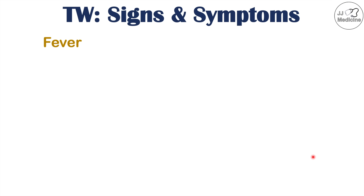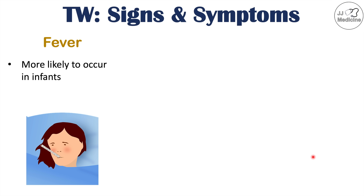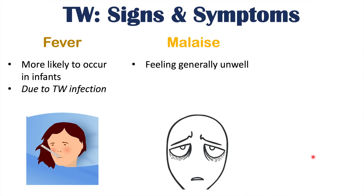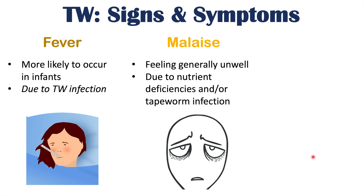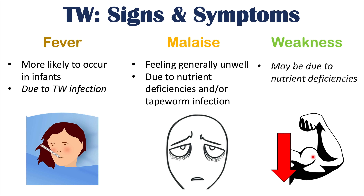Other signs and symptoms include fever, which is more likely to occur in infant patients due to the infection. It is not likely to occur in adult patients, though it could. Malaise — a feeling of generally being unwell — may also occur, possibly due to nutrient deficiencies or the tapeworm infection in general. Weakness may also occur in some patients, again due to nutrient deficiencies. We will talk about the specific vitamin more likely to be deficient from a tapeworm infection when we discuss nutrient deficiencies later in this lesson.